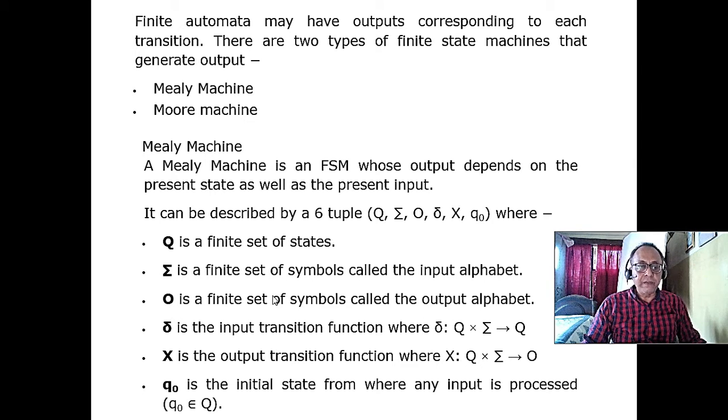They are distinct, different, and delta is the transition function. It goes from state to state, and X is the output. Here delta is the input transition function. X is the output transition function. It maps to any symbol, and Q_0 is the initial state. That is it.